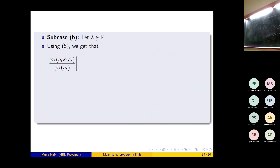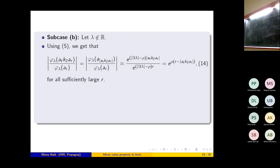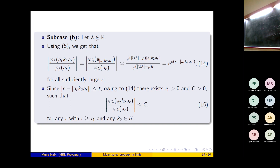For the ratio |φ_λ(a_t k₂ a_r)| / φ_λ(a_r), using the estimate for the spherical function for sufficiently large r, this is comparable to e^{(|Im(λ)| - ρ)|a_t k₂ a_r|} / e^{(|Im(λ)| - ρ)r}, which equals e^{(|Im(λ)| - ρ)(|a_t k₂ a_r| - r)}. Since ||a_t k₂ a_r| - r| ≤ t, this term is bounded. Therefore, there exist R₁ > 0 and C > 0 such that |φ_λ(a_t k₂ a_r)| / φ_λ(a_r) ≤ C for all r ≥ R₁ and all k₂ in K.